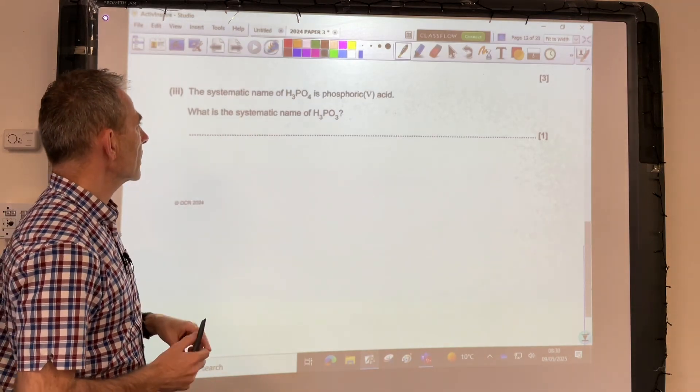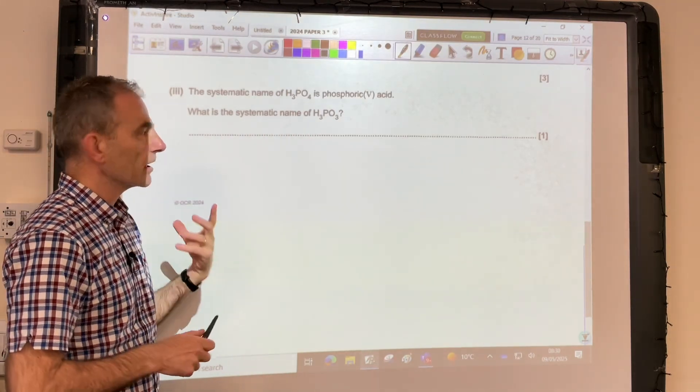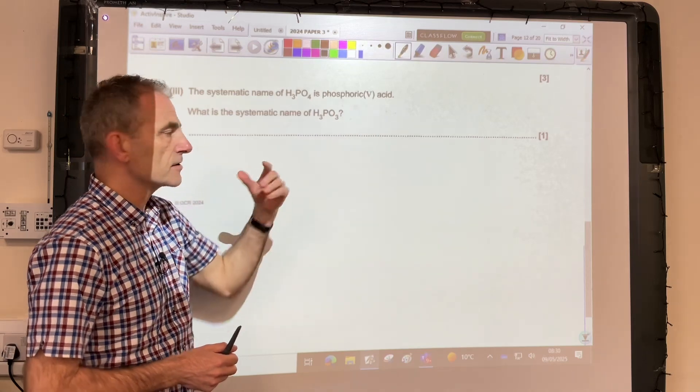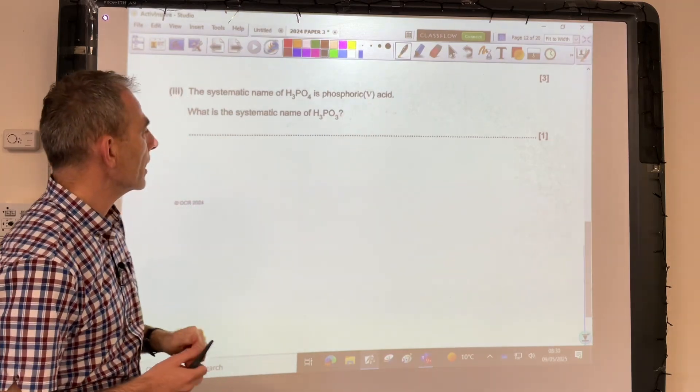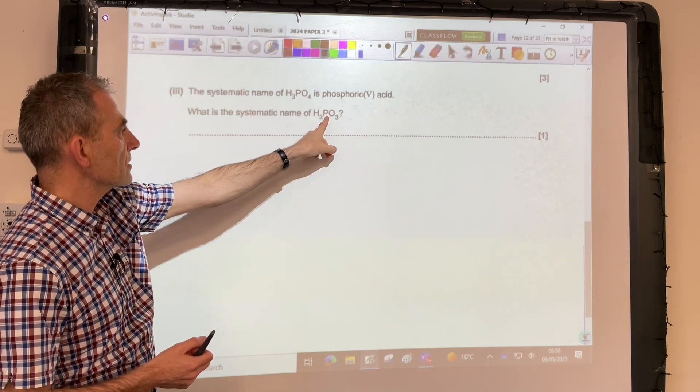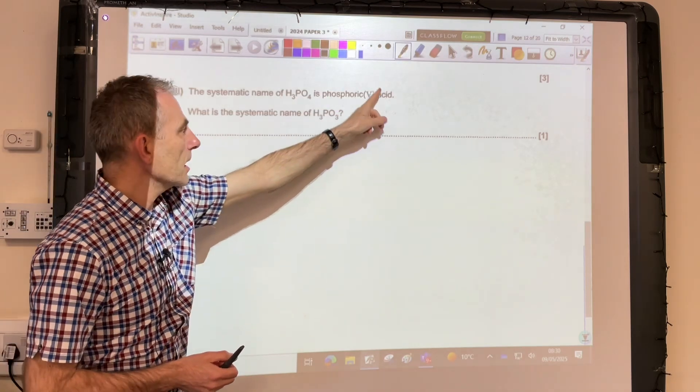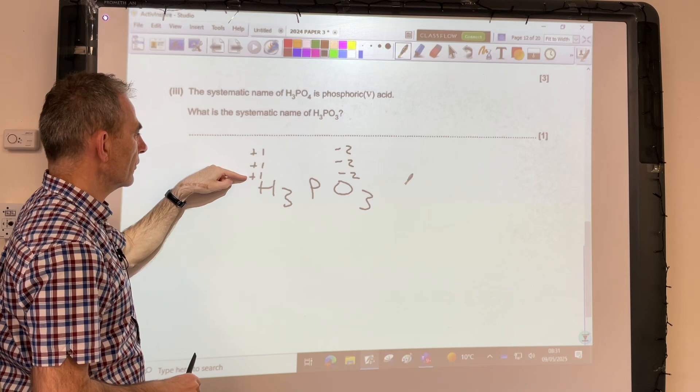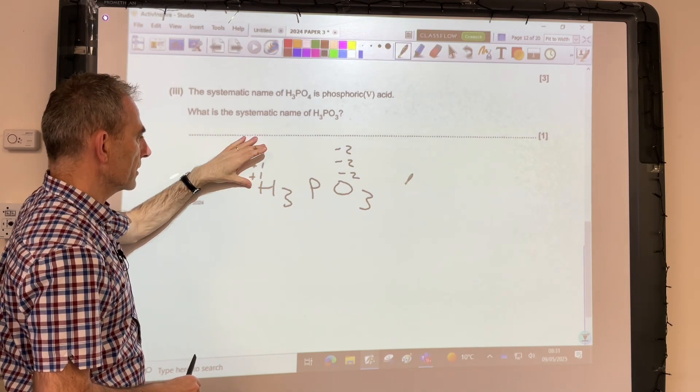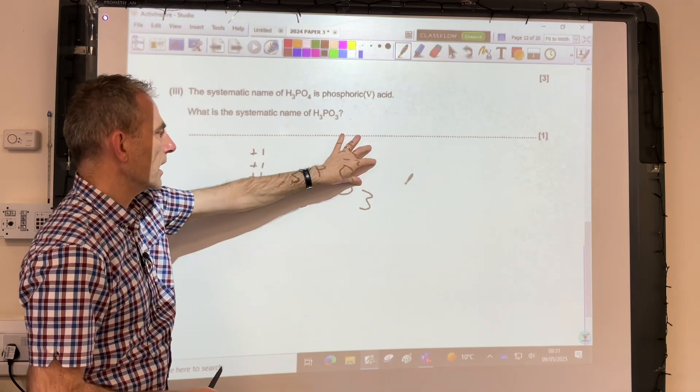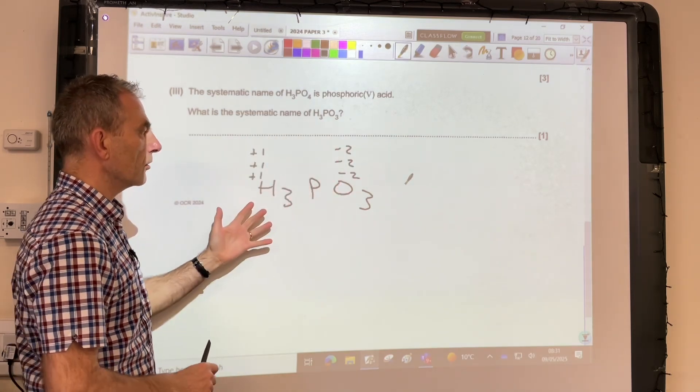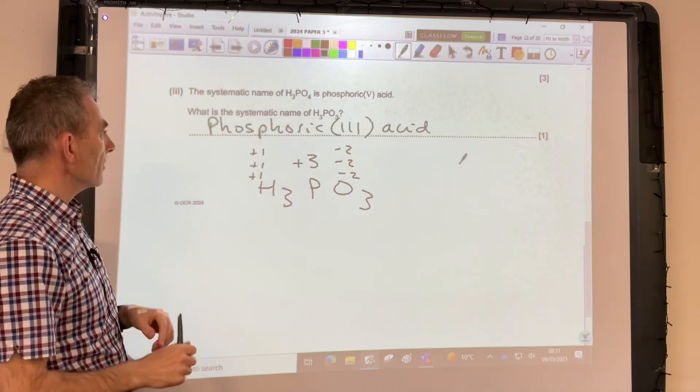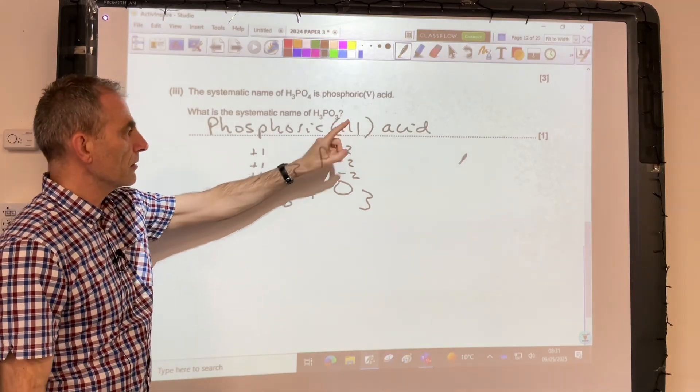Next part, so we're told that the systematic name, so systematic name in this respect includes the oxidation number of the phosphorus in this case. So in this thing here, the phosphorus is in its plus 5 oxidation state, hence that Roman 5 there. So all we've got to do is work out the oxidation state of the phosphorus in this one and then name it like that. So we've got 3 hydrogens in H3PO3. Each one has an oxidation number of plus 1. So we've got plus 3 from that. We've got 3 oxygens, each one at minus 2. So we've got minus 6 from that. The whole thing's got no overall charge. So what does this phosphorus need to be? It needs to be plus 3. So that means the systematic name is phosphoric 3, Roman 3 acid.